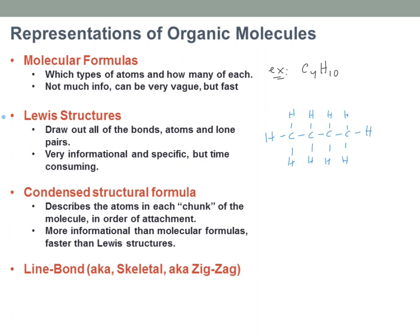When you go to the condensed structural formula, that's when you say what atoms are in each chunk — by chunk I mean the middle pieces. In this case I only have carbons as middle pieces. So the condensed structural formula would be CH3, then CH2, then CH2, then CH3. That gives roughly the same amount of information as a Lewis structure but it's a little bit easier to write. You see it a lot in textbooks, online, etc.